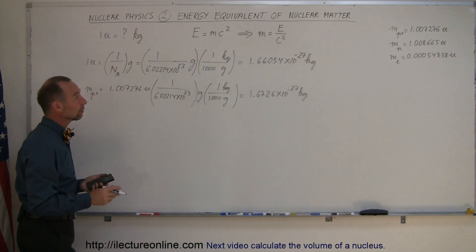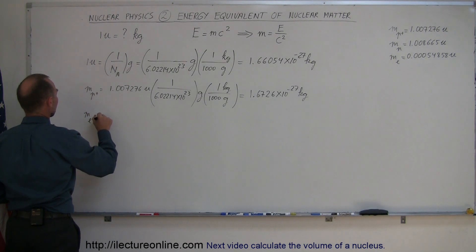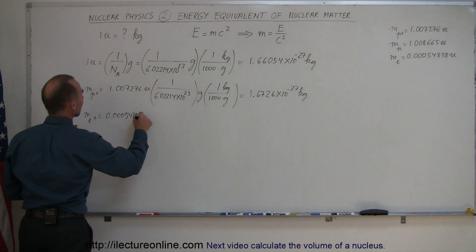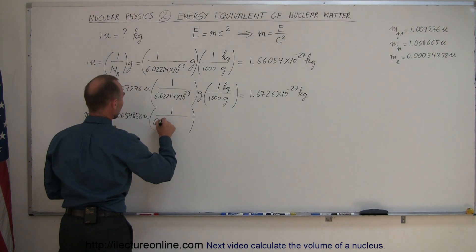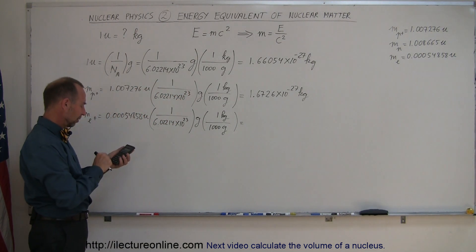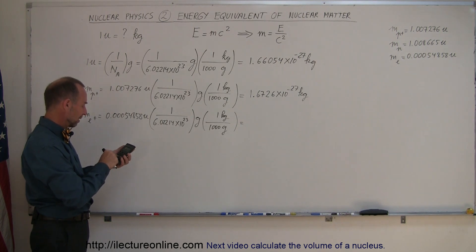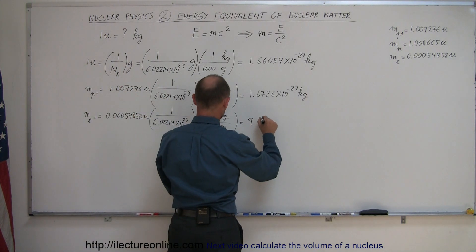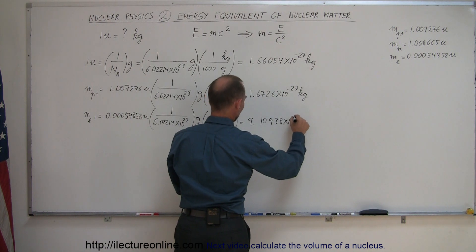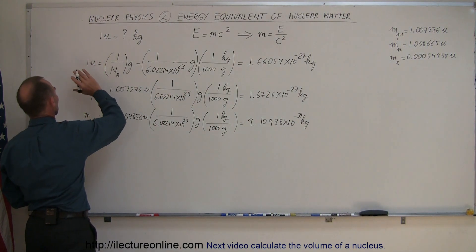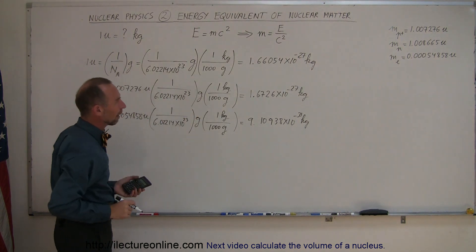In the same manner, we can convert the mass of an electron. The mass of an electron is equal to 0.0005485 atomic mass units. Converting: 0.0005485 divided by 6.02214×10²³, then divided by 1,000. We get 9.10938×10⁻³¹ kilograms. Now you should have a good understanding of how to convert the mass of a proton, electron, neutron, and so forth from atomic mass units to kilograms.